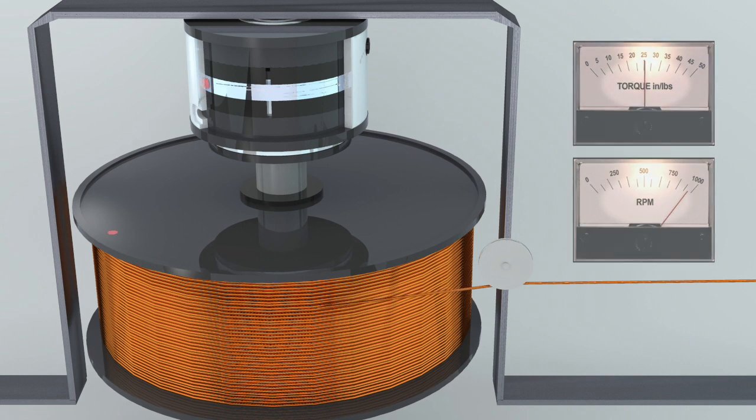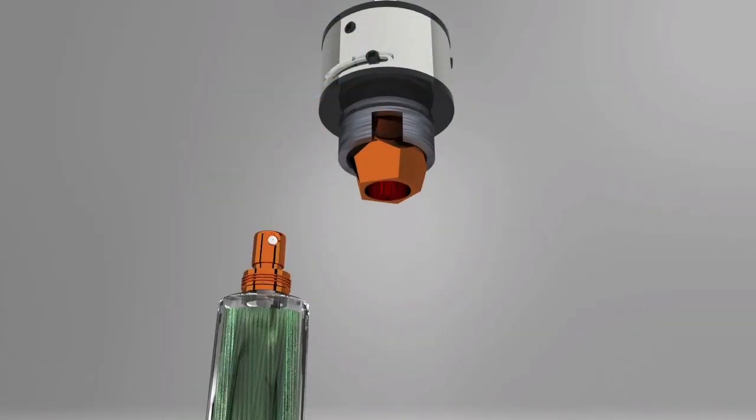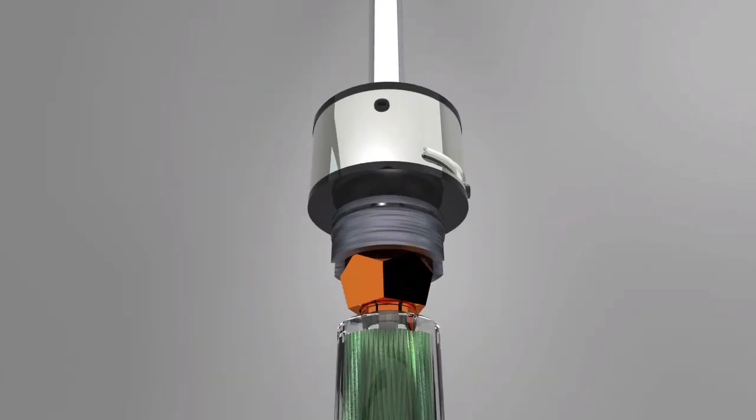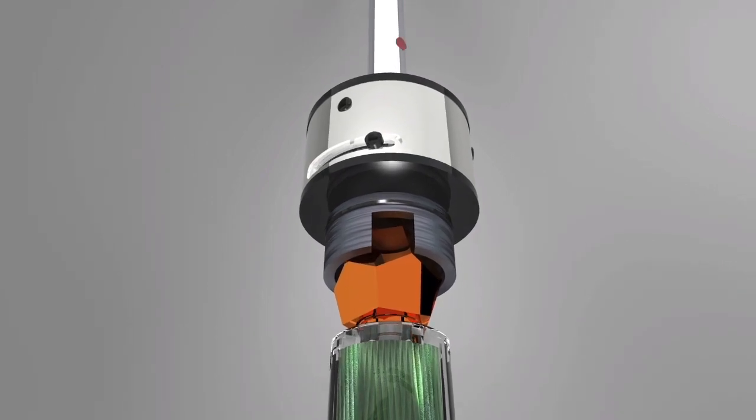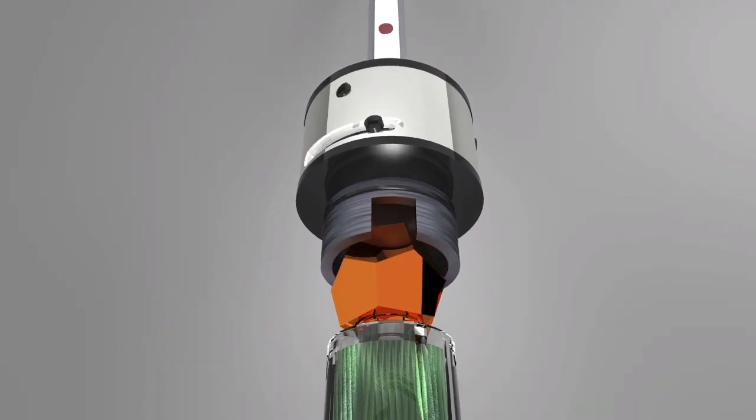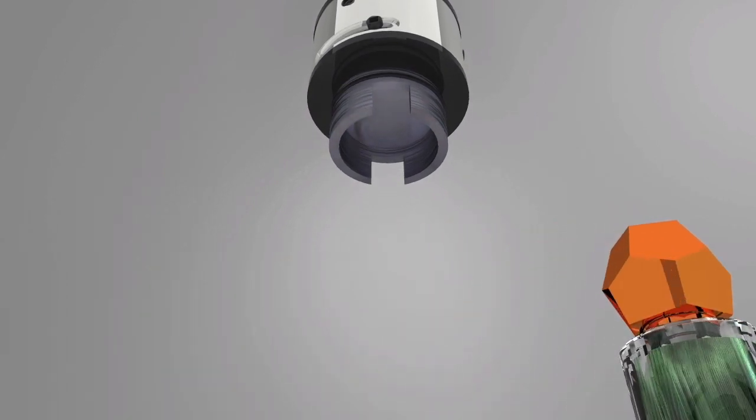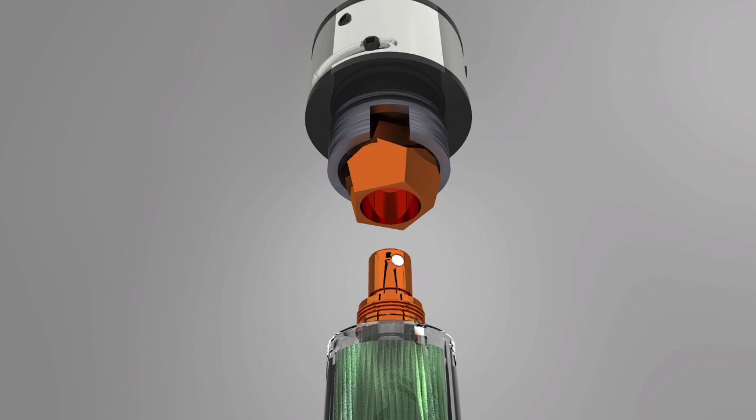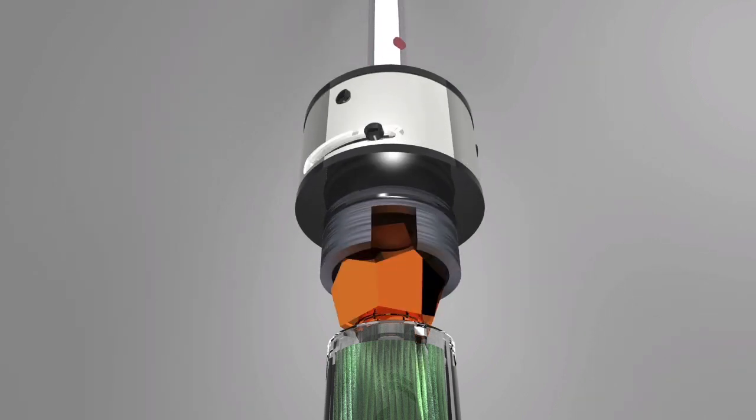To use the units as a torque limiting clutch, the housing would not be fixed and would be allowed to rotate, so the unit would limit torque from the input to the output shaft. Once the preset torque is reached, the unit would slip. This makes them ideal for bottle capping applications for consumer products and medical packaging equipment.